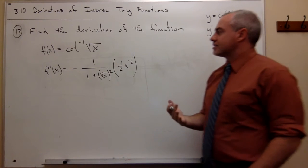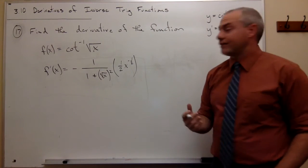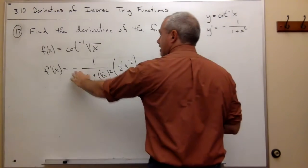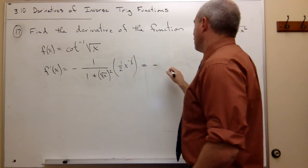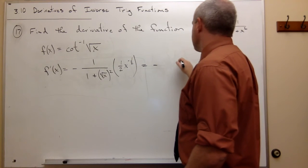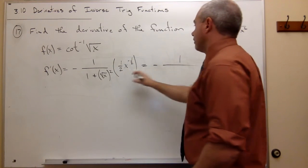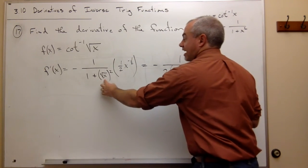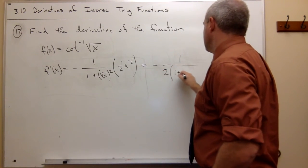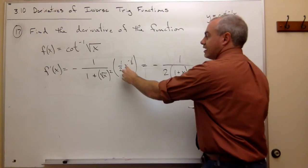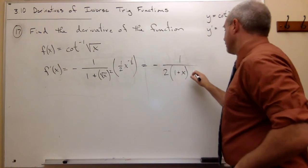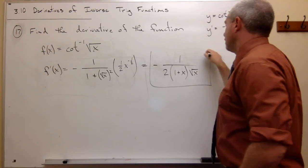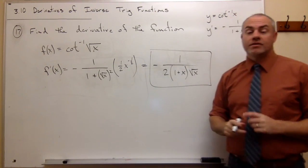Now this is maybe not the greatest form I've ever seen so we could probably simplify this just a little bit. On top I'll just put a 1. On bottom we have this 2, then 1 plus x, and this is a square root of x on the bottom. So this would be another way to write our derivative.